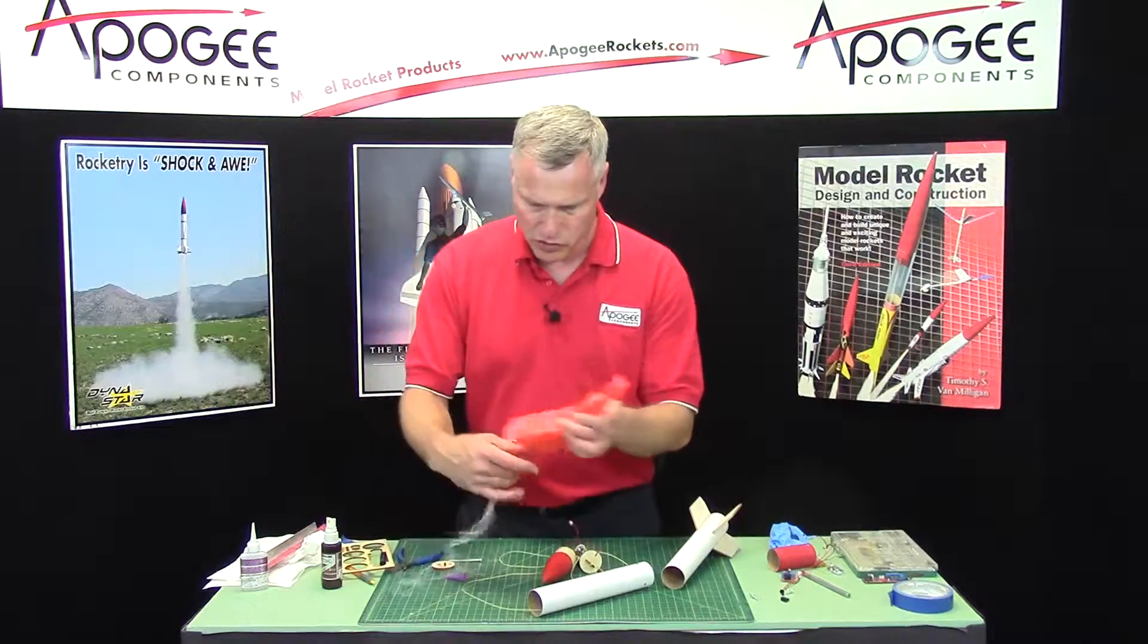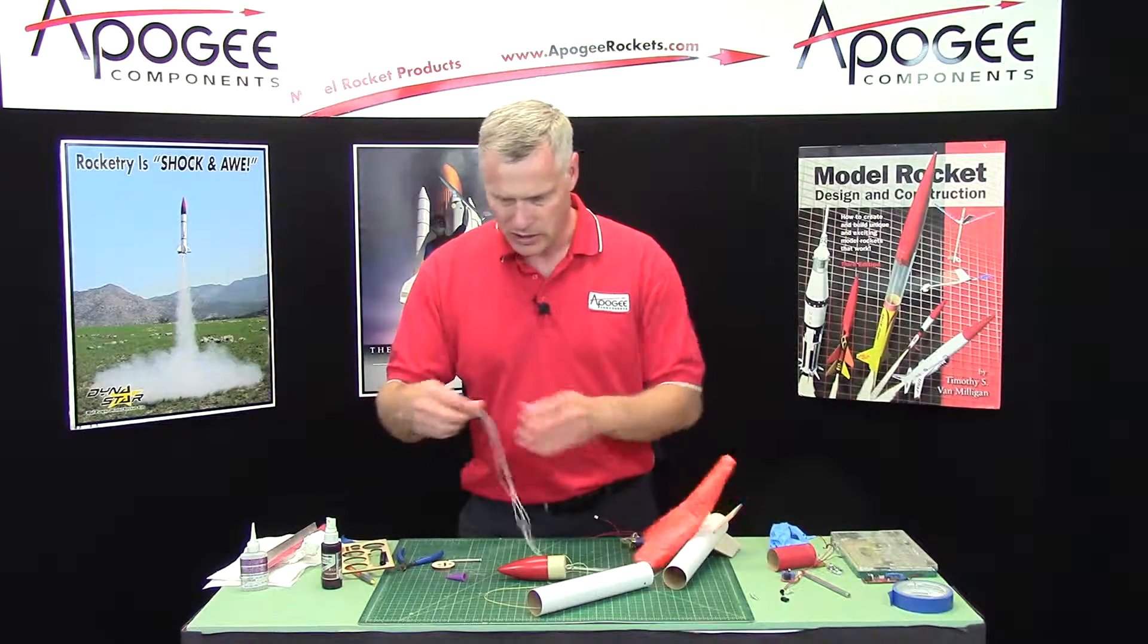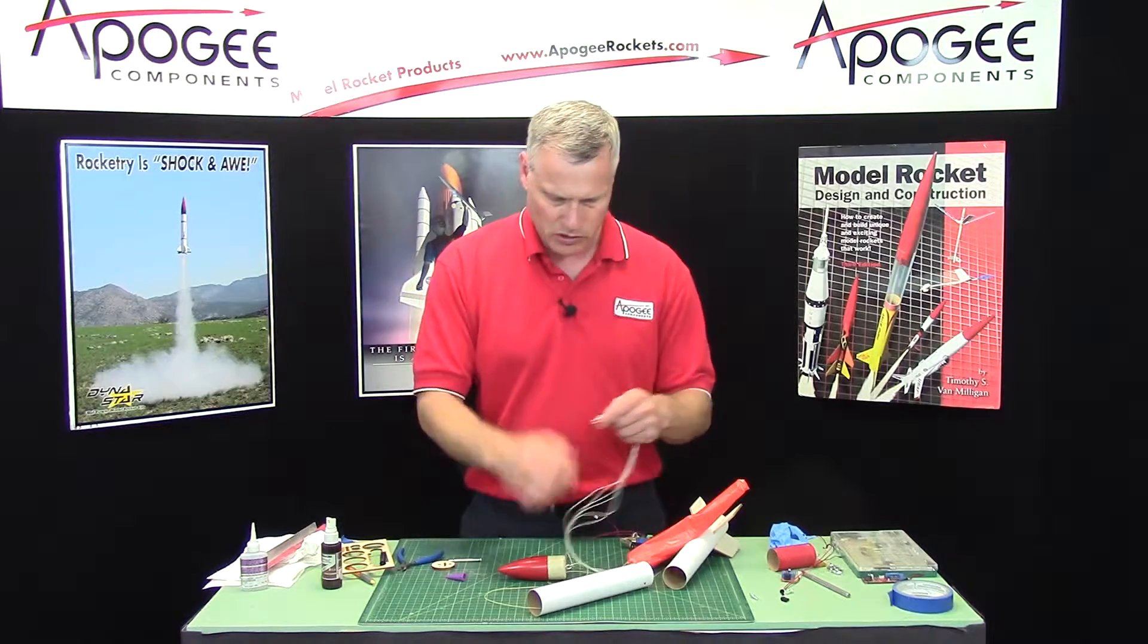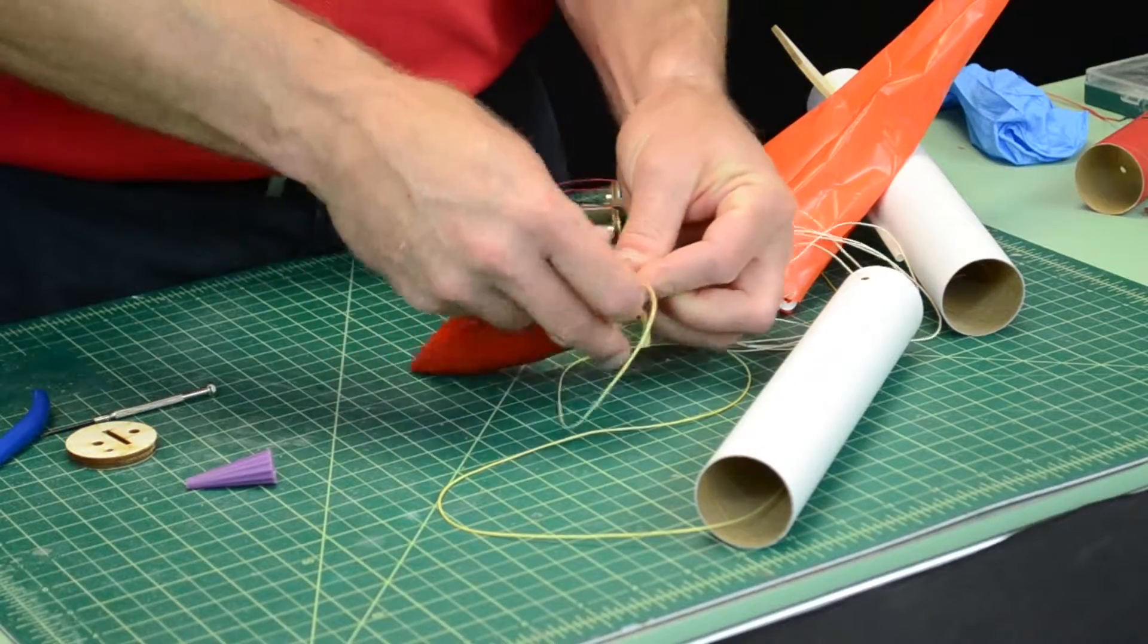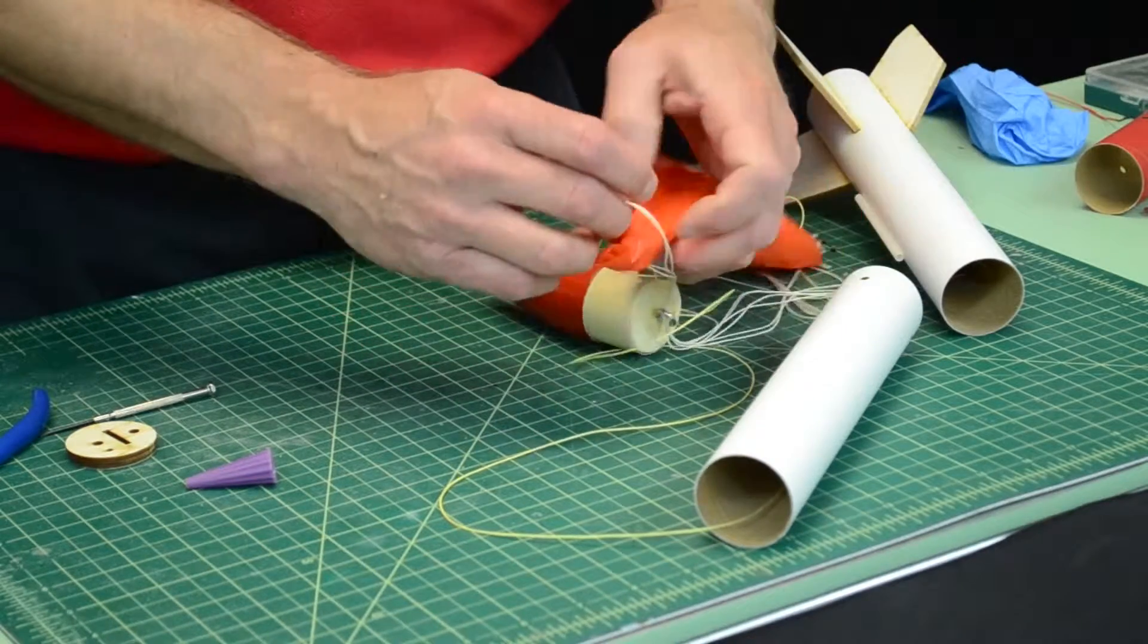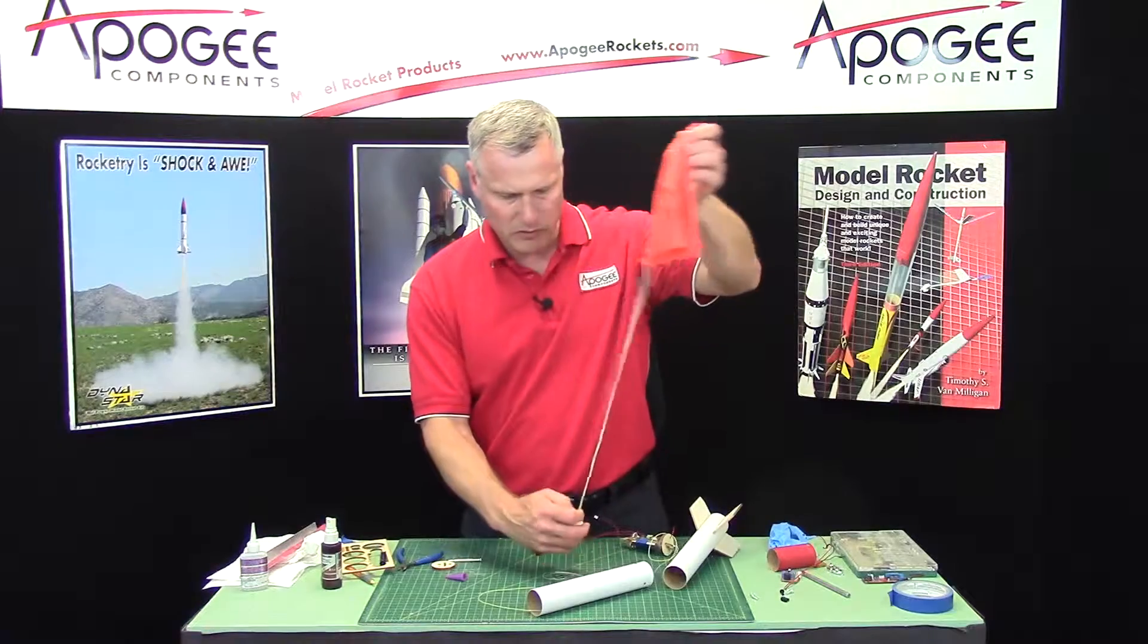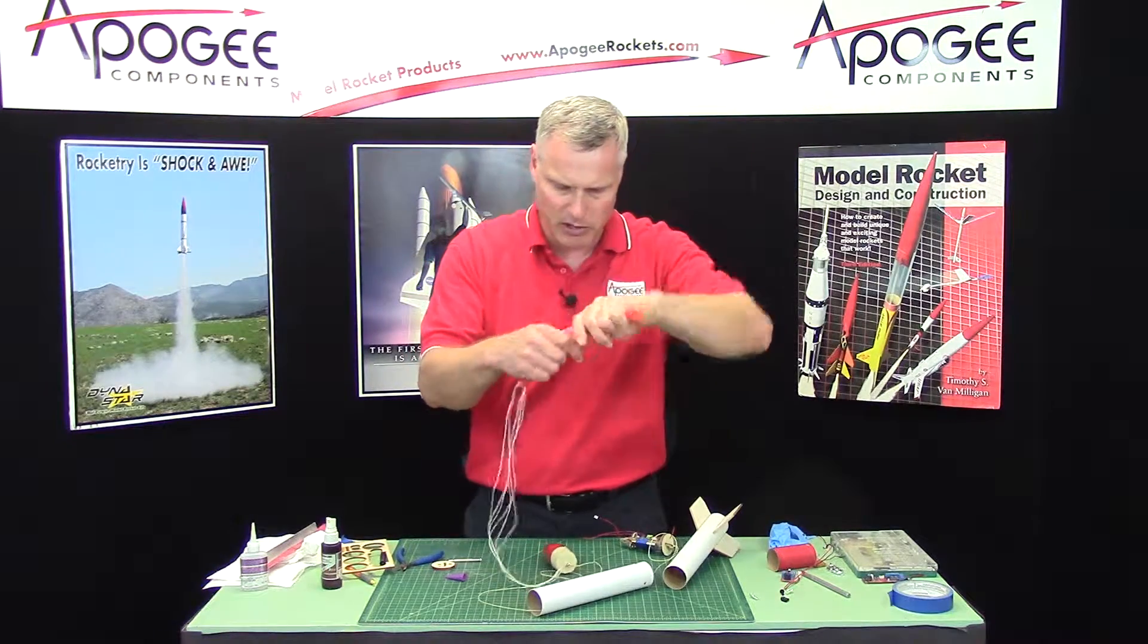And you can also attach your parachute to the same loop on the nose cone, and I'm just doing this quick, you don't want to do it like you're prepping it for flight. This is the main parachute, this is our big one, and for this rocket I think I've got about an 18 inch parachute.